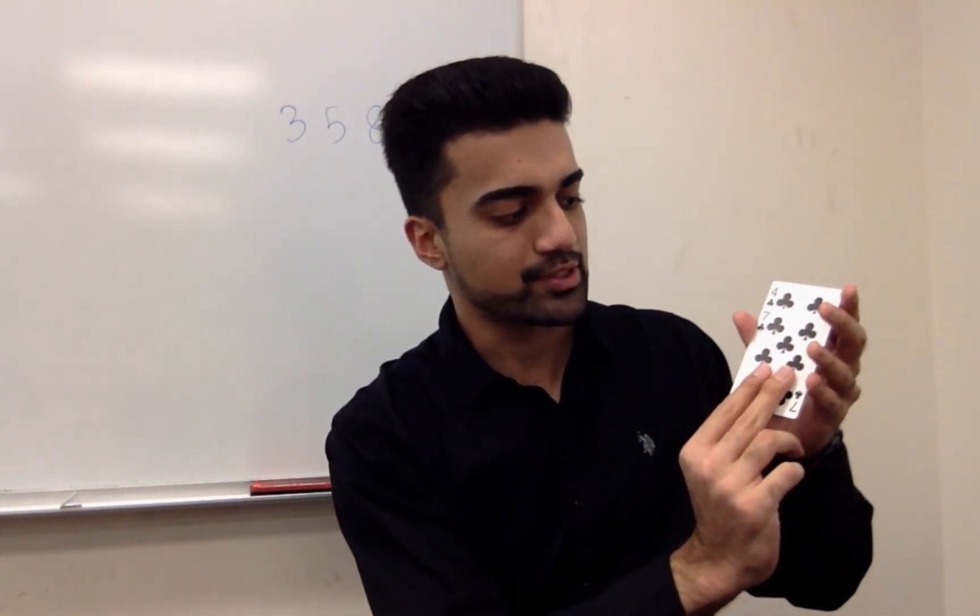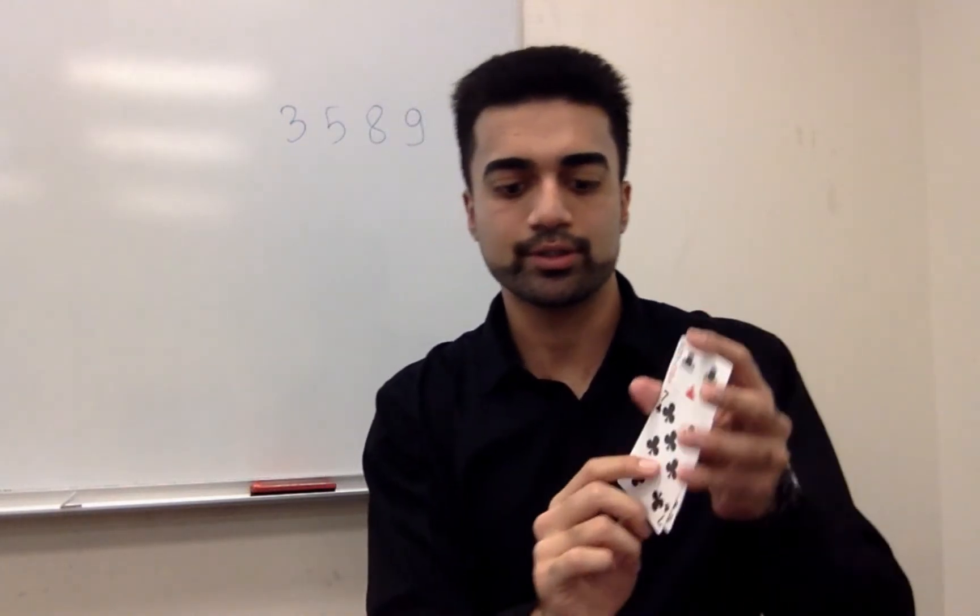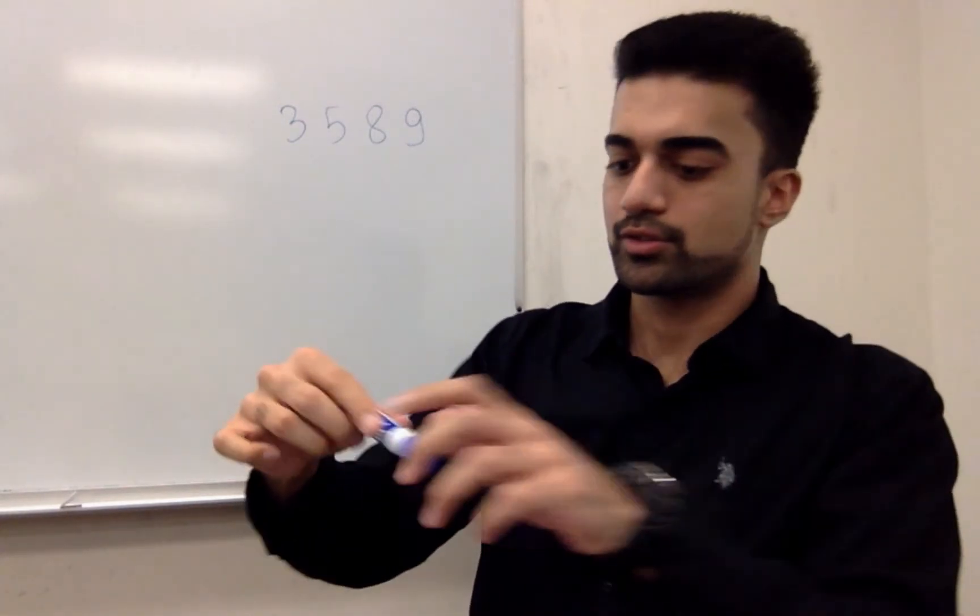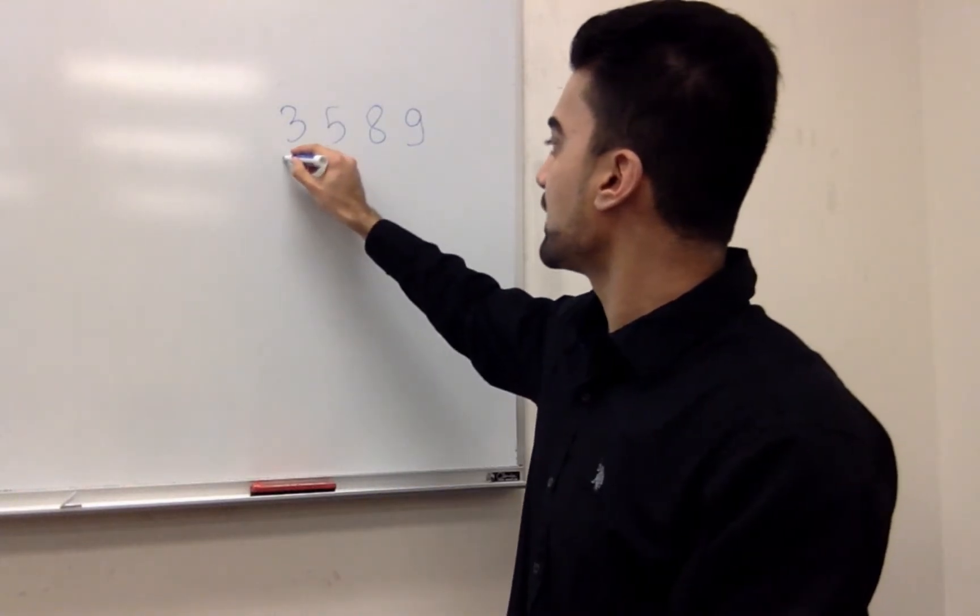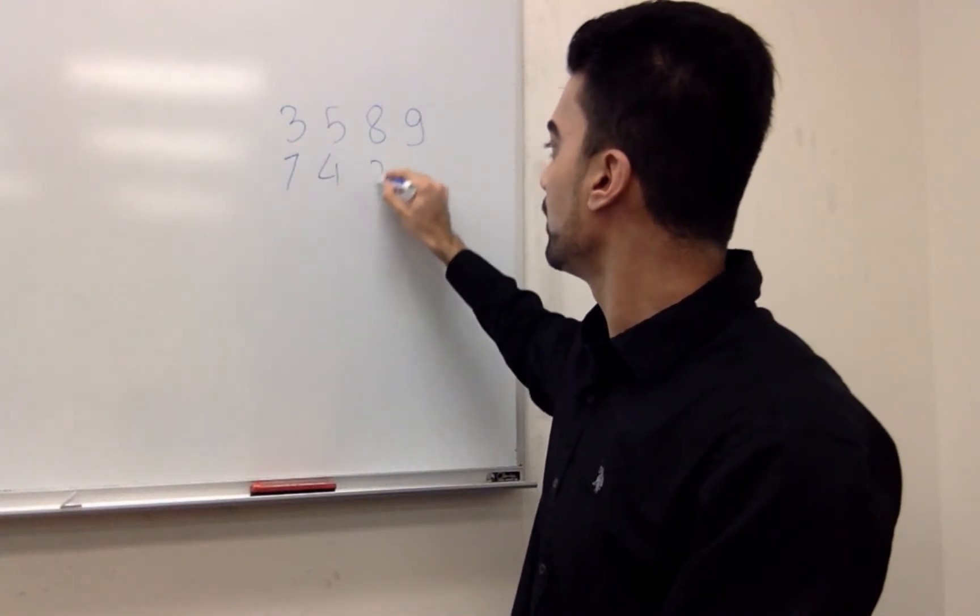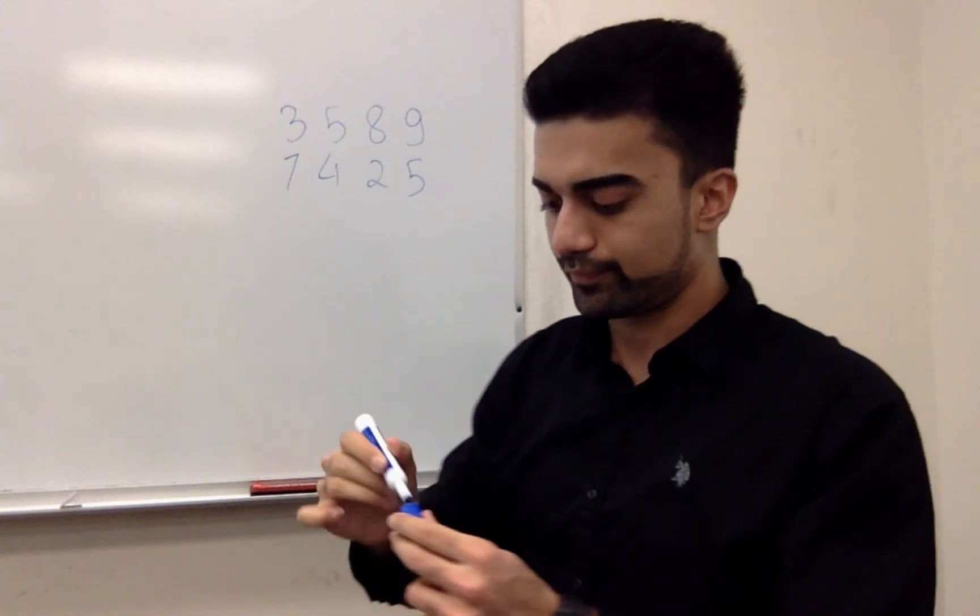So let me go ahead and shuffle it and take four random cards out of it. So my first number is going to be 7425. So let me go ahead and write that down, 7425.